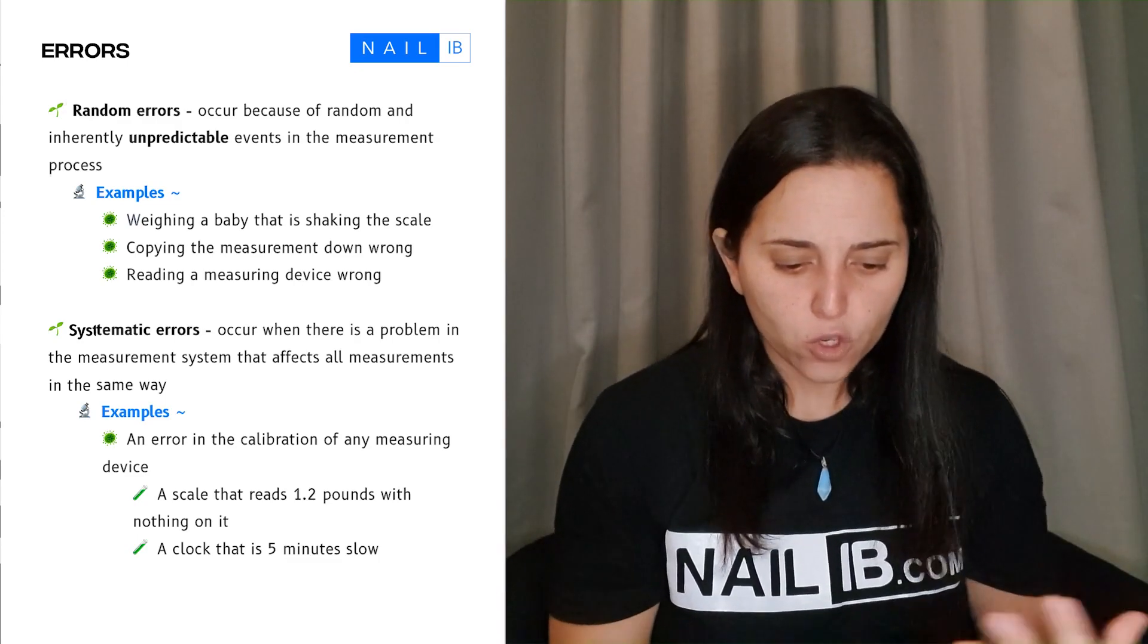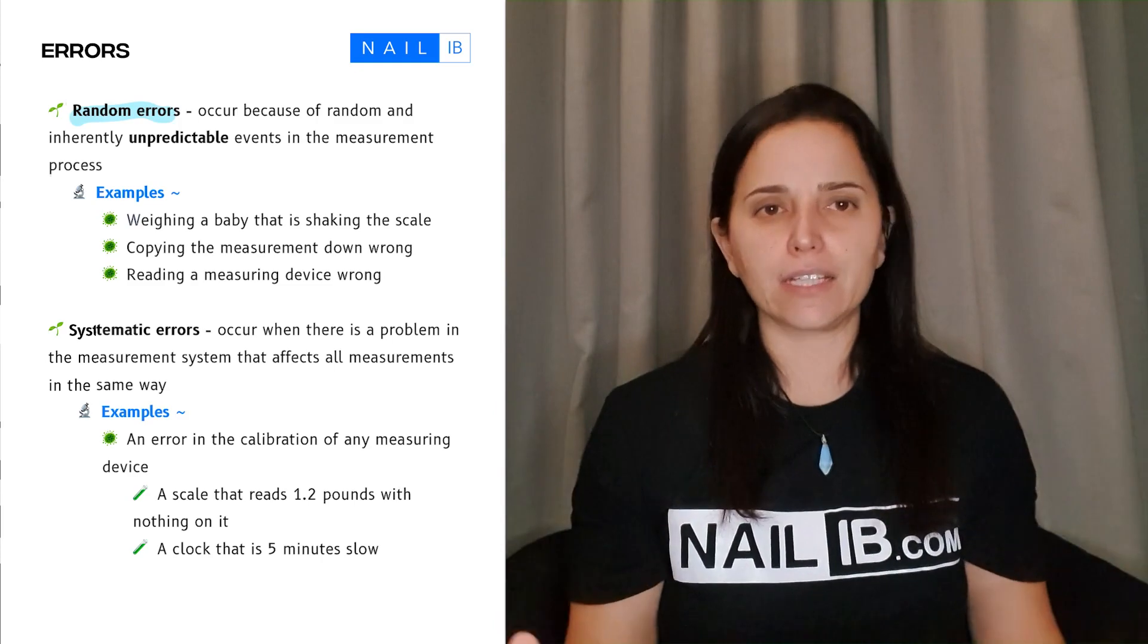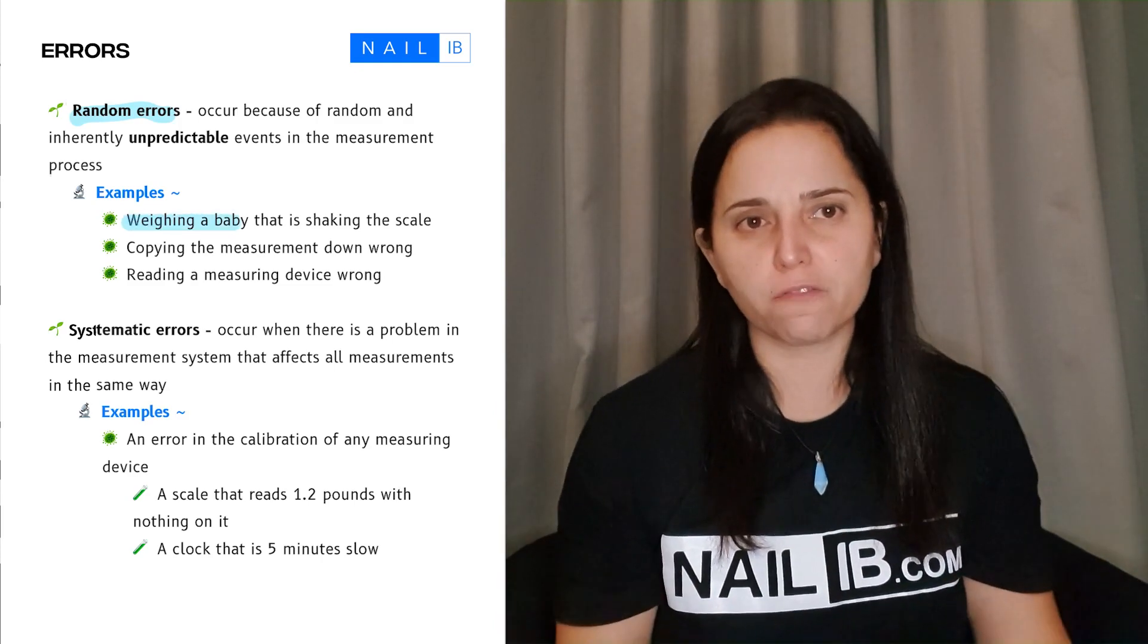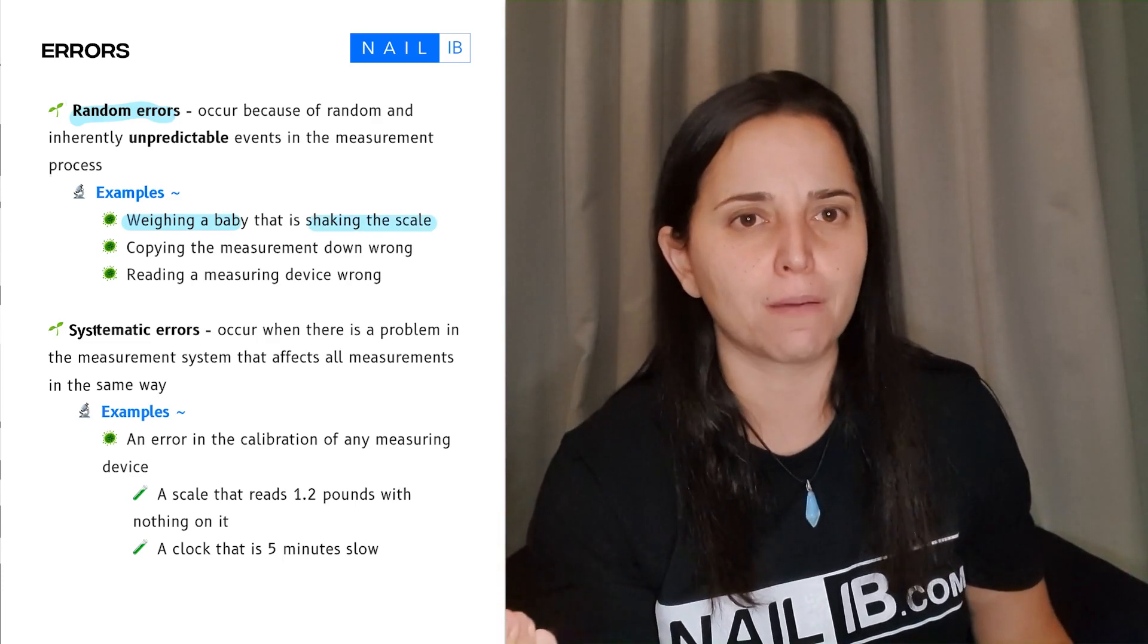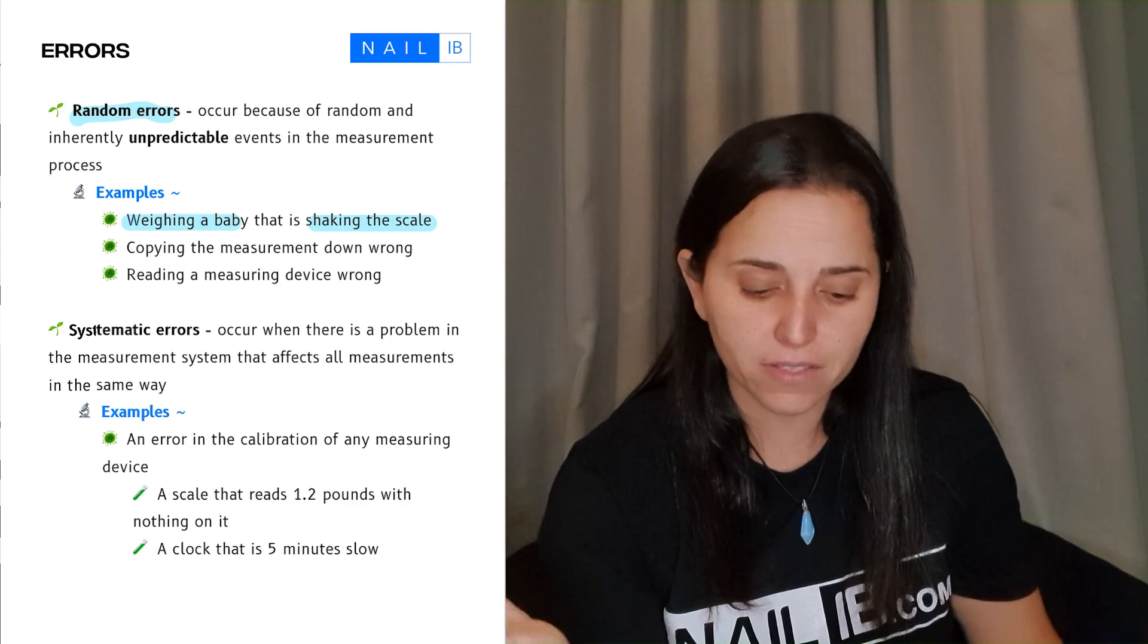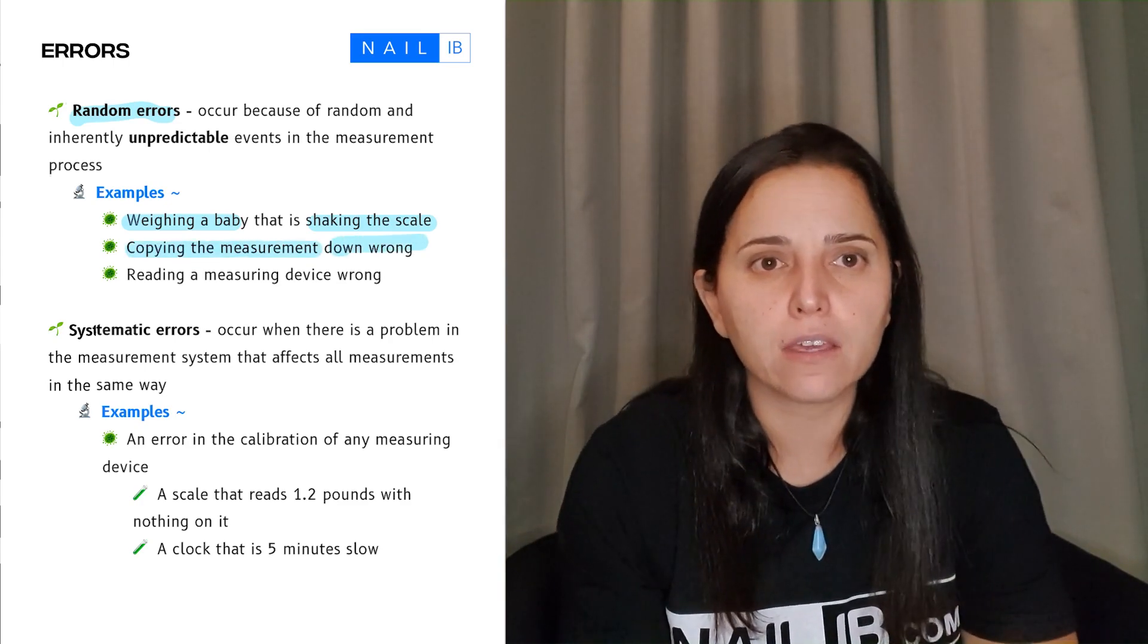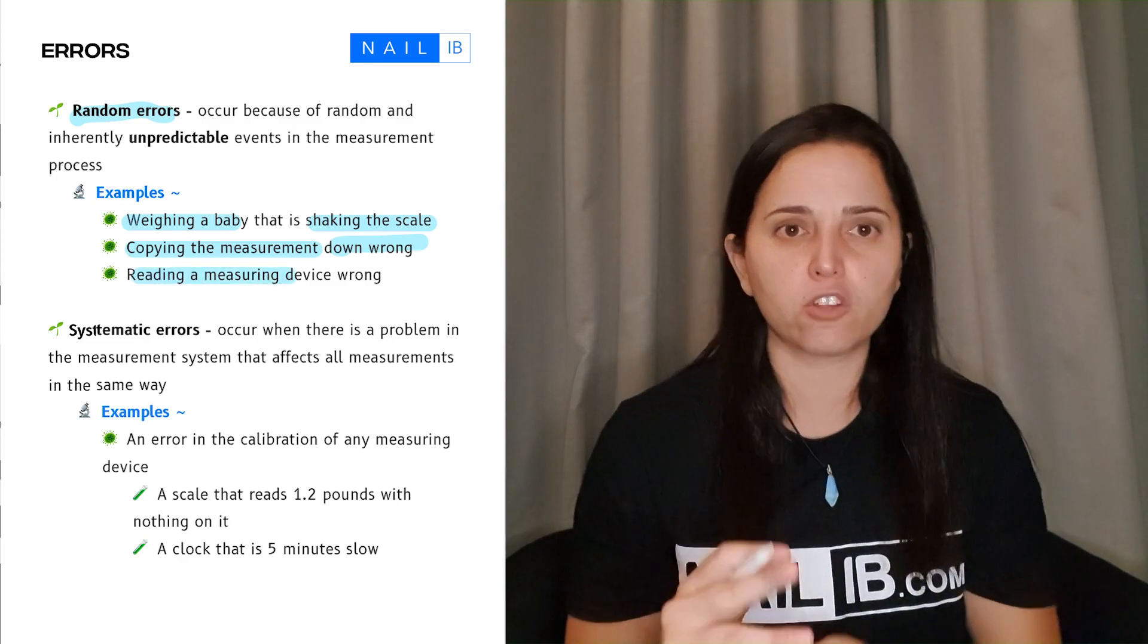When it comes to random error, we're just talking about randomly, unexpectedly it happened in your lab. For example, you were trying to measure babies but one baby was shaking a lot, you were not expecting that. Or you copied the measurements and somehow you made a mistake that happened unexpectedly, or you're reading the measurements and the device starts going wrong unexpectedly.